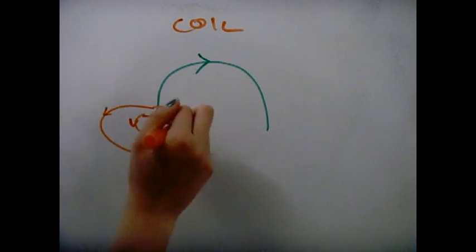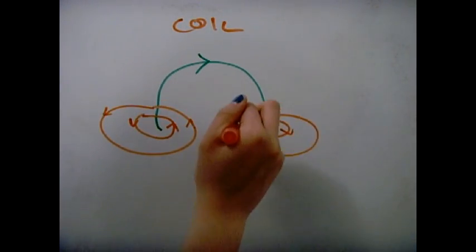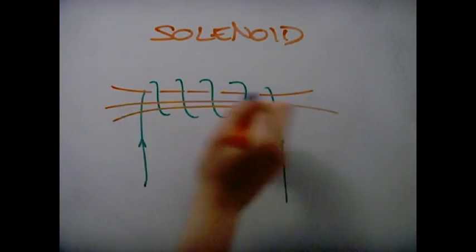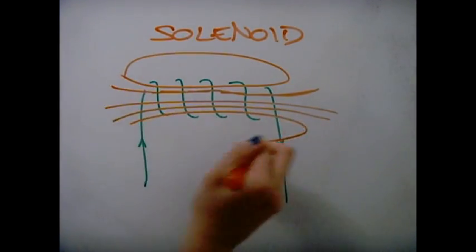The magnetic field for a circular coil looks like this. And the magnetic field lines for a solenoid is this.